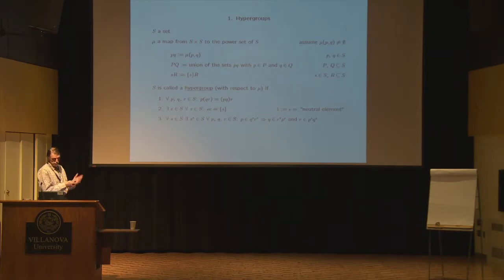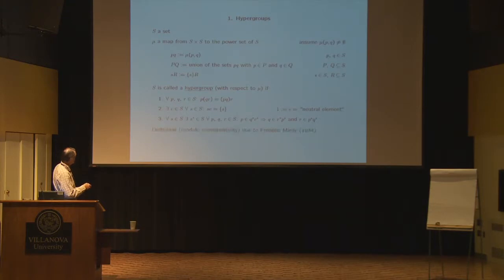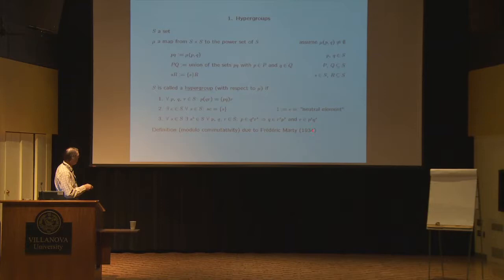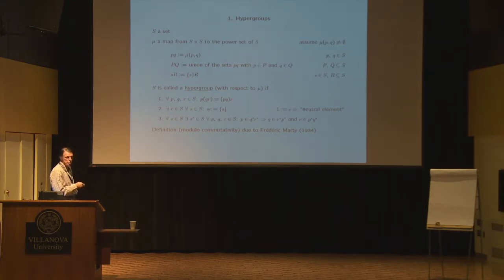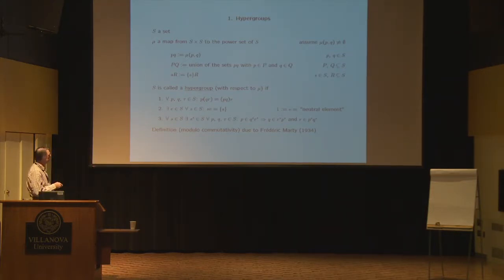That's a straightforward setting. This is what Frédéric Marty called a hypergroup in 1934. He also added commutativity — that P times Q equals Q times P — which I think is probably not really needed, since nobody would define a group to be commutative by default.